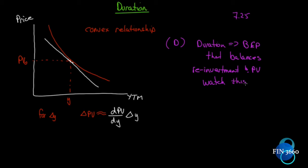Keep in mind that what you're watching does not use continuous compounding e to the negative rt. When we discount cash flows, we're typically discounting at an annual, semi-annual, or quarterly rate. For the discounting here you would use continuous discounting — e to the negative rt — and then we'll come back to what we're doing.